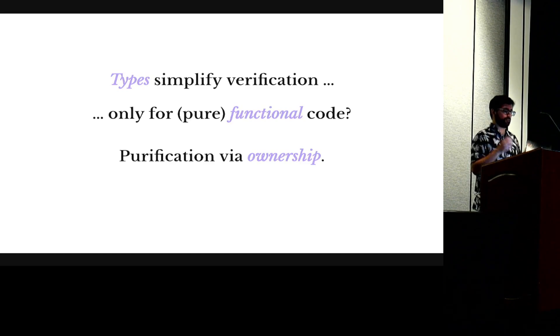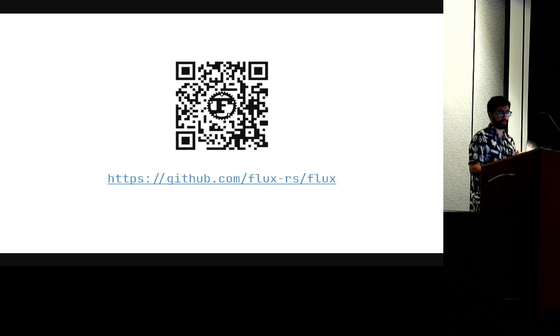So that's the end of my talk. I showed you how we can, using the ownership mechanism in Rust, extract a pure fragment that we can safely depend on and make verification easier. And I want to leave you with a link to the code of Flux. You can go and download it and use it to prove whatever you want to prove in Rust. Thank you.